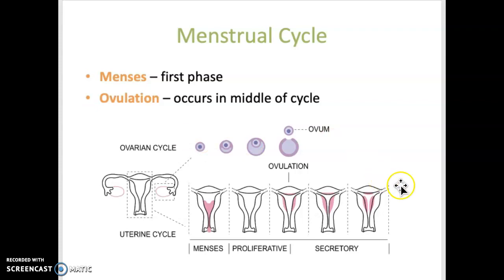The menstrual cycle lasts approximately 28 days and consists of several phases during which the endometrium — the lining of the uterus — undergoes changes due to the secretion of sex hormones. The term menses is the discharge of the endometrium, including tissue, blood, and mucus, excreted through the vaginal canal. This occurs in the first few days of the cycle. Ovulation occurs in the middle of the cycle, usually around day 14. Menarche is the onset of menstruation, which usually begins around age 12 to 13, and menopause is the cessation of menstruation and ovarian activity.